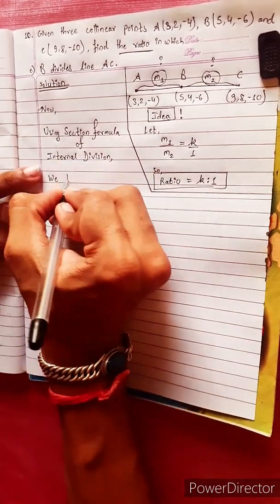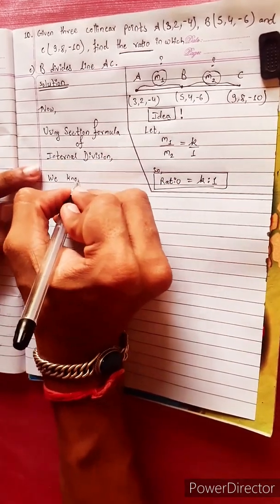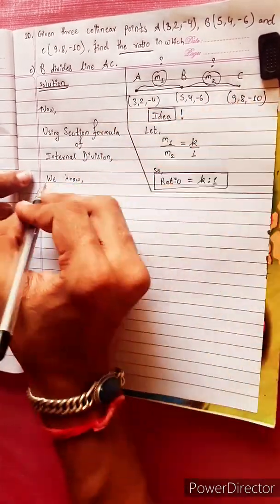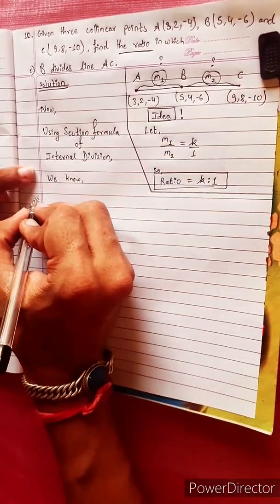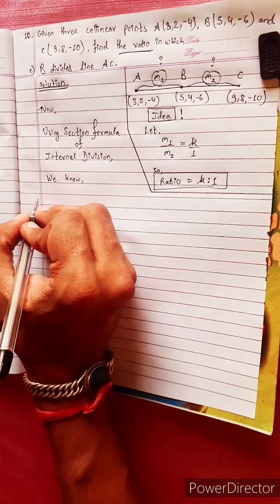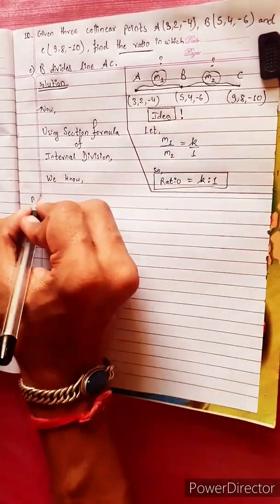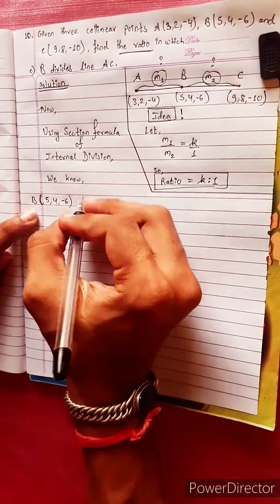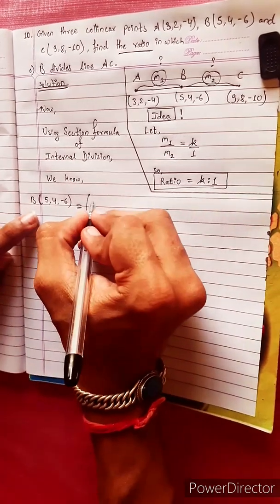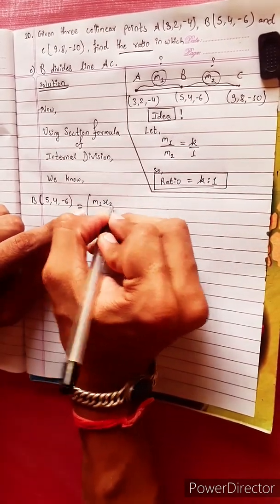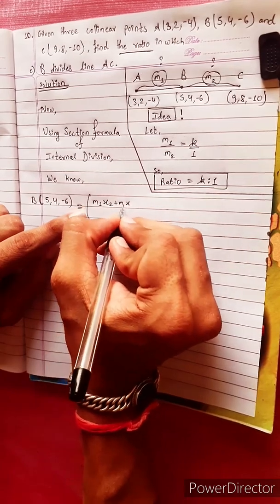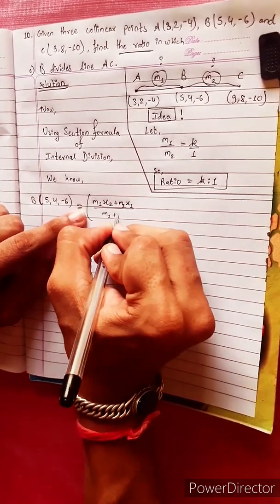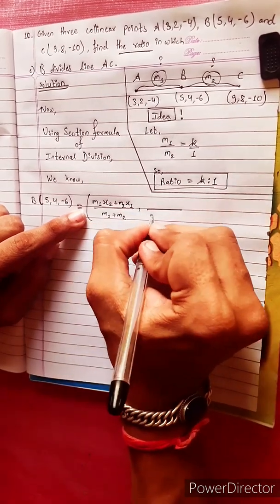We know Point B has coordinates (5, 4, -6). Using the section formula for internal division: x-coordinate equals M1·X2 plus M2·X1, divided by M1 plus M2.